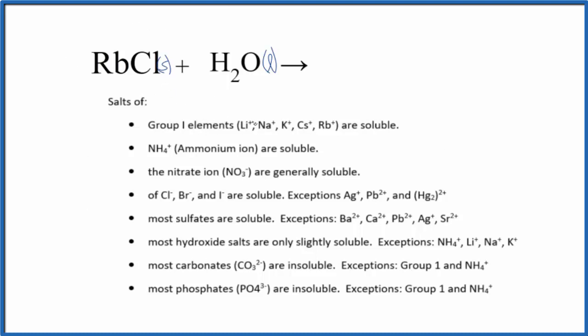So if we look at our solubility rules here we see, first rule, Group 1 elements like rubidium here are soluble. So if we have salts of rubidium they're going to be soluble in water.